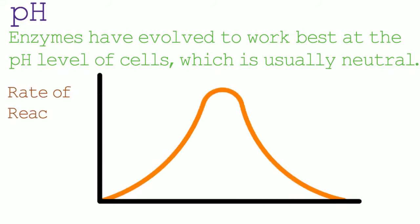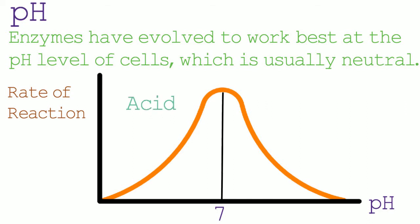Let's have a look at a graph that plots the rate of reaction of enzymes against the pH level. The optimal rate of reaction occurs at a pH of 7, when the solution is neutral. If the solution is acidic the rate of reaction would fall, and the more acidic the solution the lower the rate of reaction. Acidic solutions have a pH value between 0 and 7, and the closer to 0 the more acidic and the lower the rate of reaction. A pH value between 7 and 14 means the solution is an alkali, and as the pH approaches 14 the lower the rate of reaction becomes, because the solution is a stronger alkali.